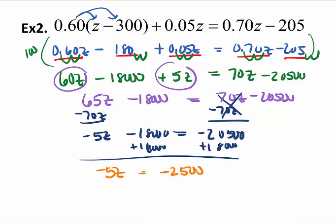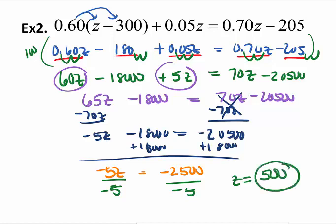My last step is to isolate the z. So I'm going to divide by negative 5. A negative divided by a negative always cancels. My answer here is 500. I could have done this without clearing the decimals. It would have given me the same exact answer. If you're going to clear decimals just like fractions, please be careful and do every single term. If you have a negative divided by a negative, you have to cancel those out. That's very important.